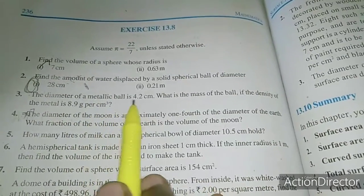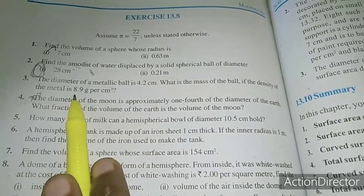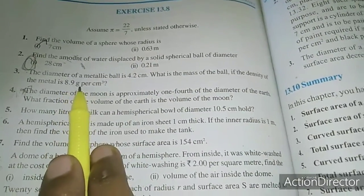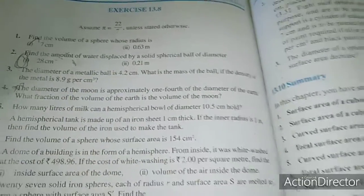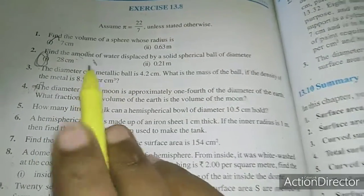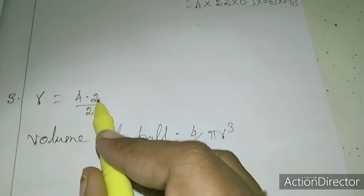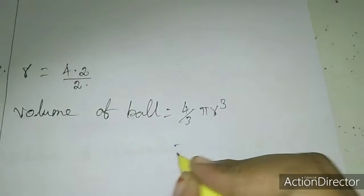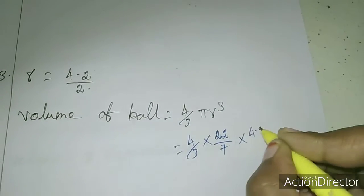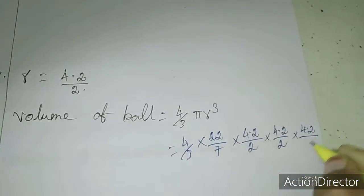Third sum: the diameter of a metallic ball is 4.2 centimeter. What is the mass of the ball if the density of the metal is 8.9 gram per centimeter cube? Since 1 cm³ = 8.9 grams, first we will find out the volume, then multiply by 8.9 to get the mass of the ball. So r = 4.2 ÷ 2. Now working out: 4/3 × 22/7 × (4.2/2)³.